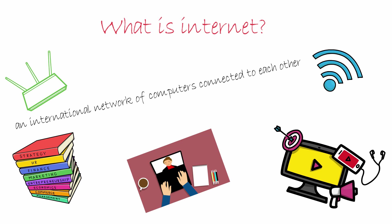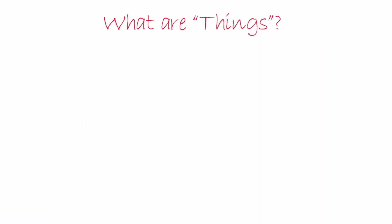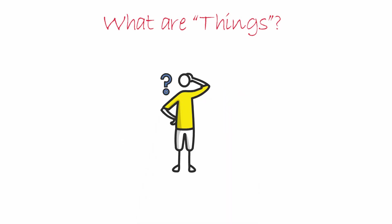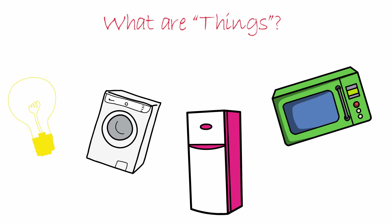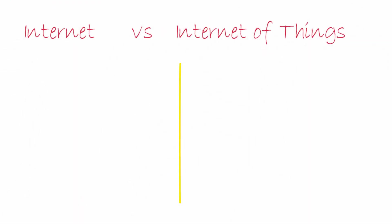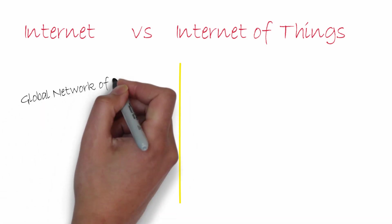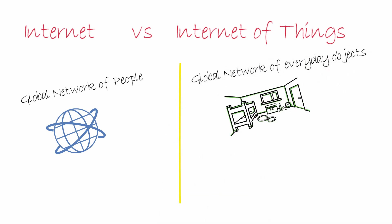Now, when I have defined Internet for you, I would also like to define things. Things are basically everyday objects that have network connectivity. Examples of things can include home appliances like lights, microwaves, refrigerators, and washing machines. Let's draw a comparison between Internet and Internet of Things: they both are global networks, but Internet is a global network of people while Internet of Things is a global network of everyday objects.